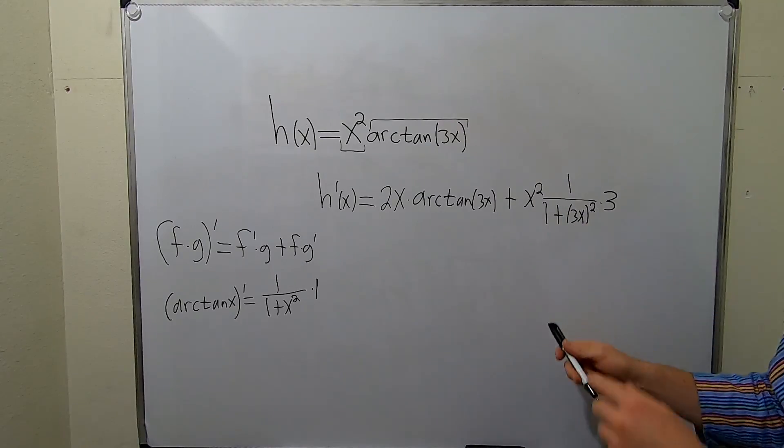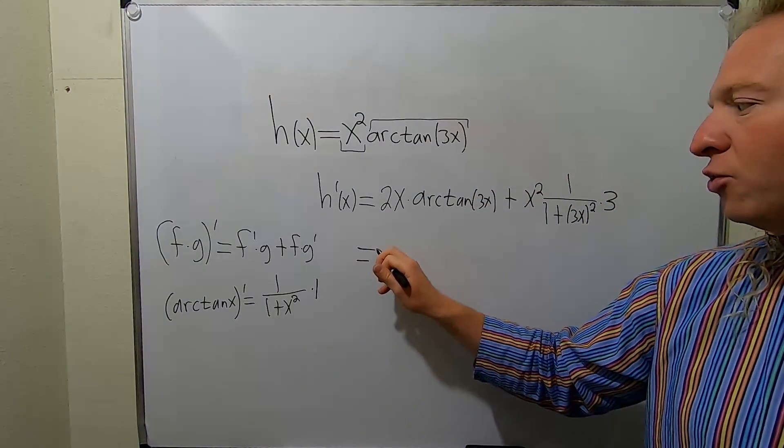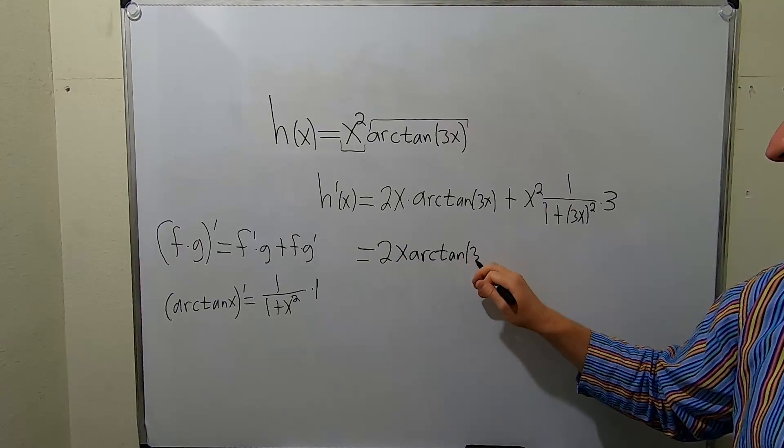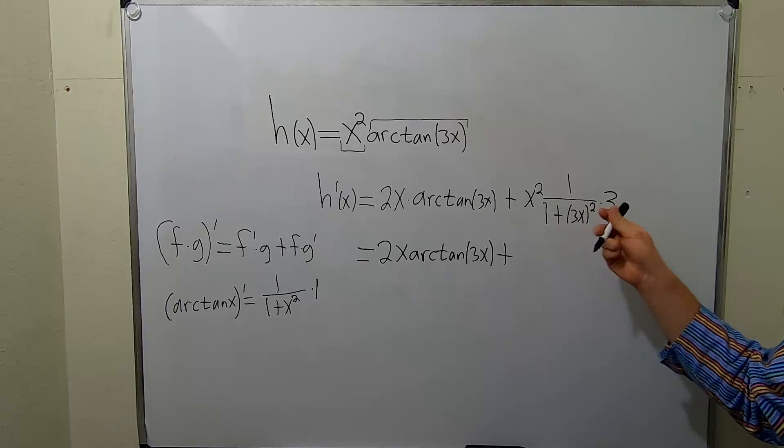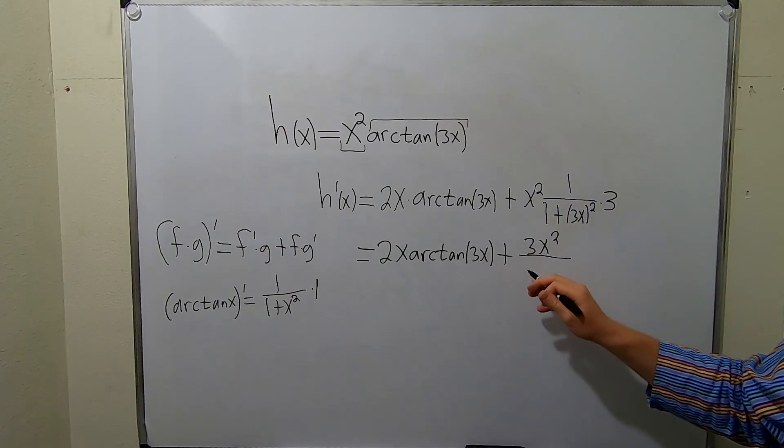You don't want to leave your answer like this. You maybe want to put these things upstairs. Let's go ahead and rewrite it. This will be 2x arctangent of 3x plus 3x squared. So 3x squared over 1 plus.